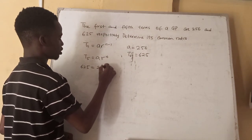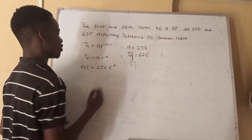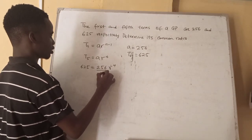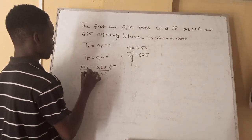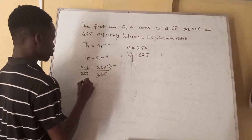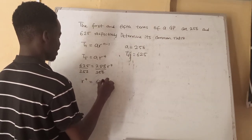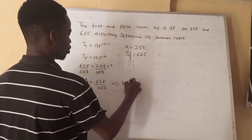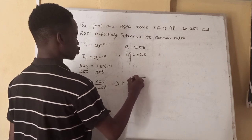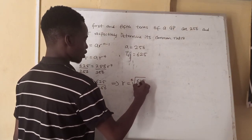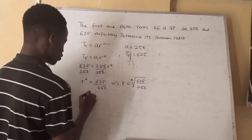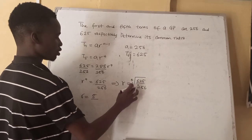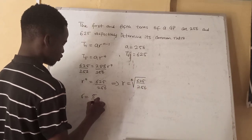Substituting, we have 625 equal to 256 times R raised to the power 4. We are looking for R, our common ratio. Dividing by 256, we have R raised to the power 4 equal to 625 over 256. So R is equal to the fourth root of 625 over 256. The fourth root of 625 is 5 and the fourth root of 256 is 4.